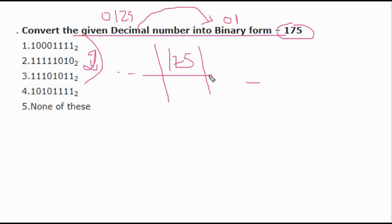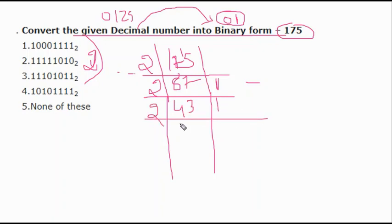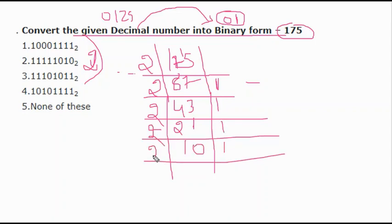Write 175 in the box format and write 2 beside it. We keep dividing until we reach the smallest possible digit. 175 ÷ 2 = 87, remainder 1. 87 ÷ 2 = 43, remainder 1. 43 ÷ 2 = 21, remainder 1. 21 ÷ 2 = 10, remainder 1. 10 ÷ 2 = 5, remainder 0. Continue dividing even if you get remainder 0, as long as the quotient is not the least number.